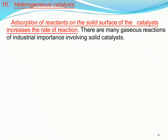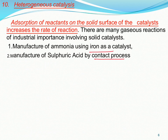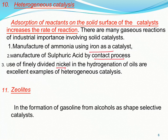Titration में end point ढूंढते हैं और color change observe करते हैं। कुछ ऐसे indicators जैसे silver halides — जब उसका precipitate बनता है तो surface पर कोई particular dye जैसे eosin adsorb हो जाती है। Analytical और industrial field में इसका बहुत use है। 10th application: heterogeneous catalysis — उसमें भी reactant का adsorption होता है solid surface पर। Industrial examples: manufacture of ammonia (iron as catalyst), sulfuric acid plant में contact process, and hydrogenation using finely divided nickel। 11th application: zeolites — used in formation of gasoline from alcohol as selective catalysts — वहाँ भी adsorption ही काम करता है।